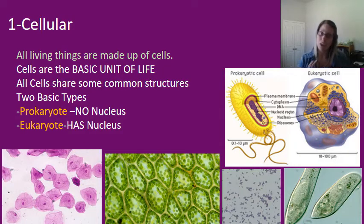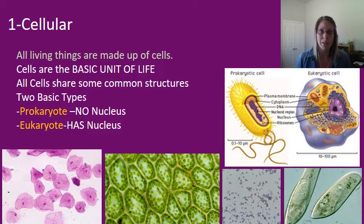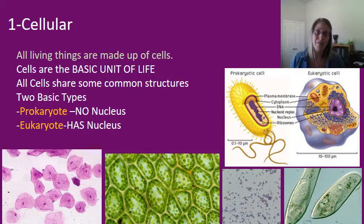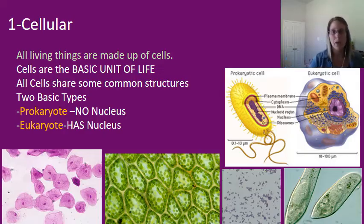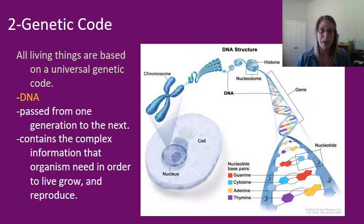The first characteristic of life is being cellular. All living things are made of cells — cells are the basic unit of life. We'll talk more about cell structure later. There are two basic types: a prokaryote, which does not have a nucleus, and a eukaryote, which does have a nucleus. The nucleus is an organelle within eukaryotic cells where we find the genetic material, or DNA.